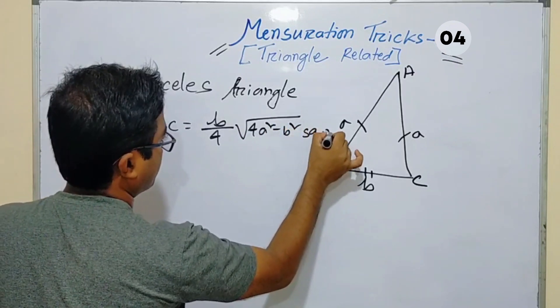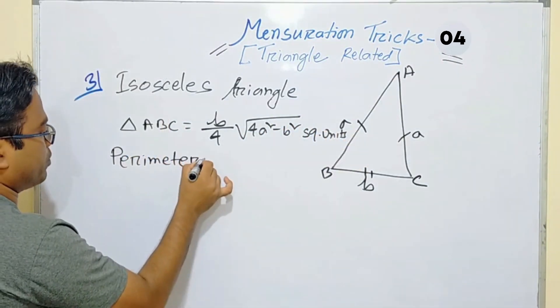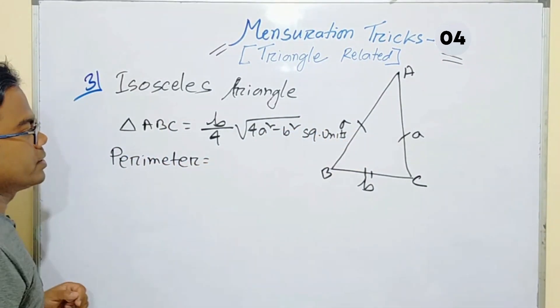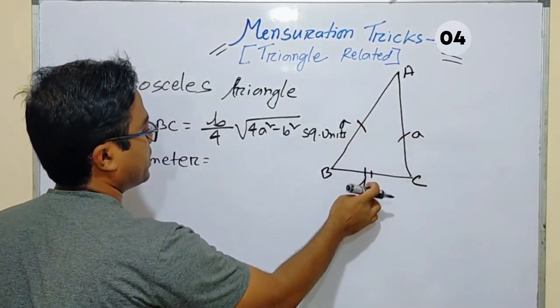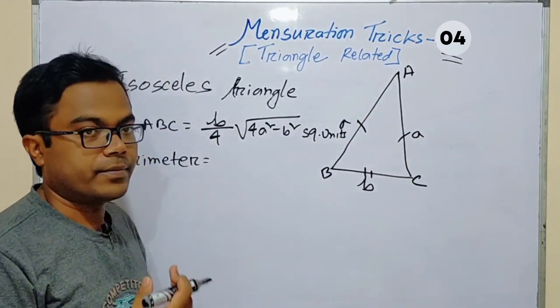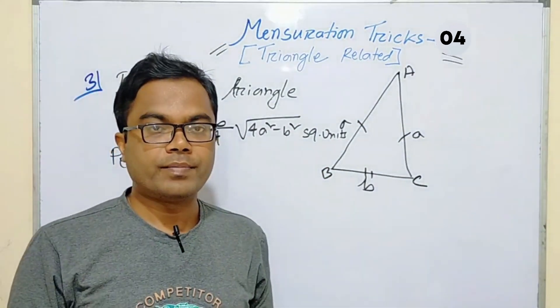The area of an isosceles triangle ABC equals b divided by 4 times the square root of 4a squared minus b squared, in square units. The perimeter is the sum of three sides: a plus a plus b, which equals 2a plus b.